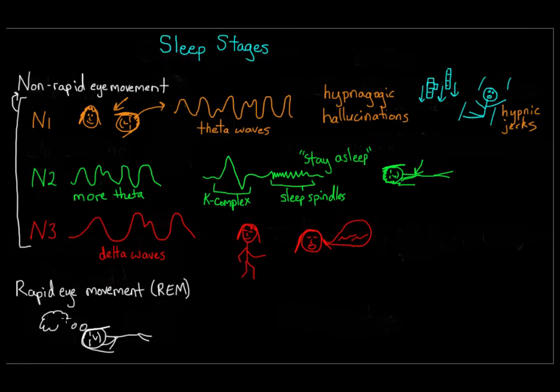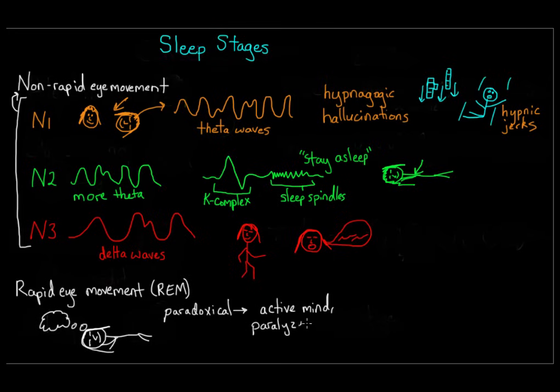REM sleep is sometimes called paradoxical sleep because your brain actually seems very active and awake, but your body is prevented from doing anything.